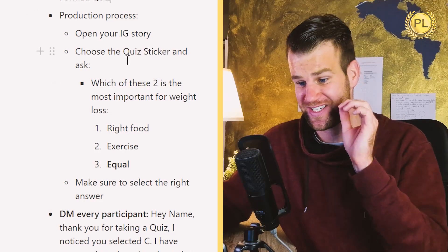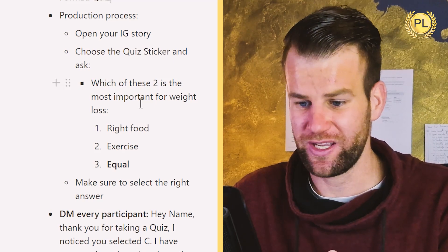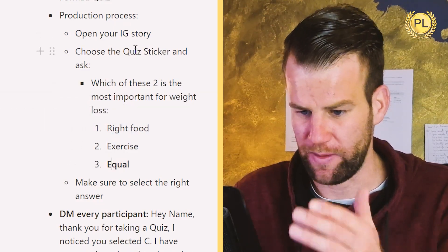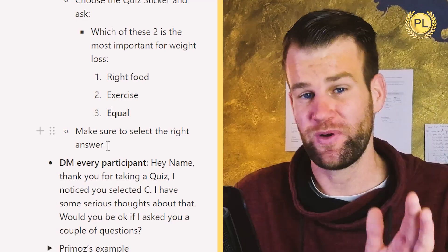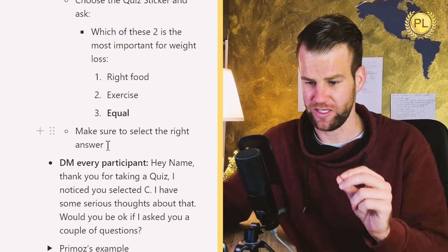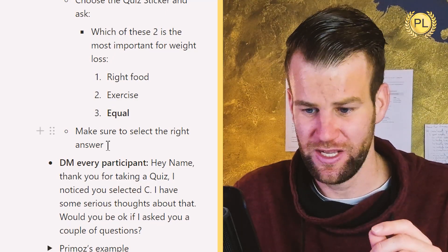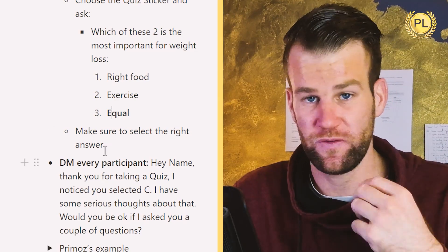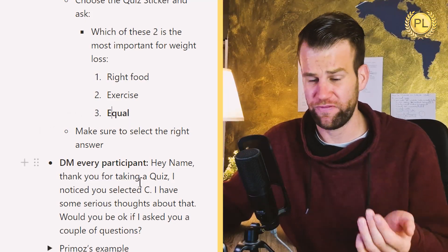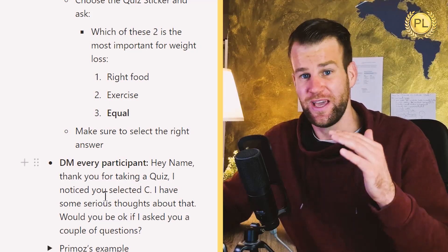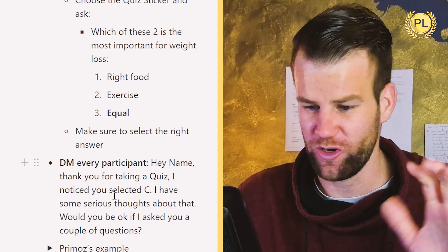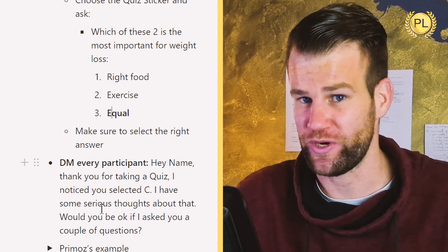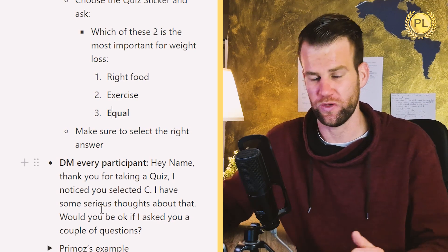Open your Instagram story, choose the quiz sticker, and ask people which of these two things is more important for weight loss. Make sure to select the correct answer. Later, after people vote and express their opinion, you're going to DM each of these people and say: 'Hey John, thank you for taking the quiz. I noticed you selected A — I have some serious thoughts about that. Would it be okay if I ask you some questions?' They'll say yes, and then you continue the conversation with them.